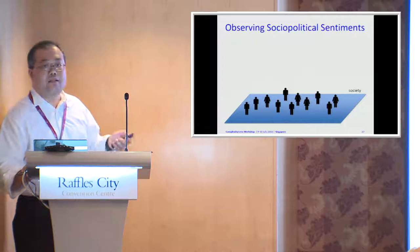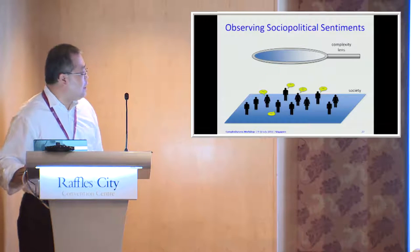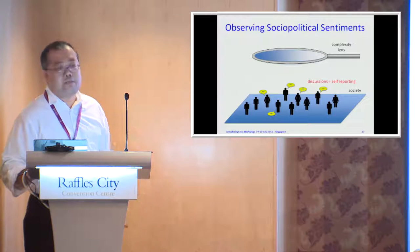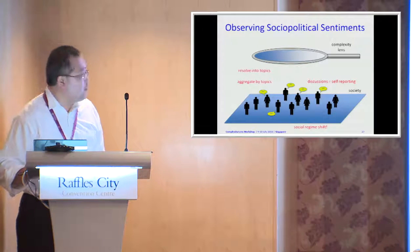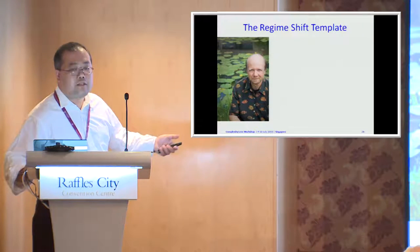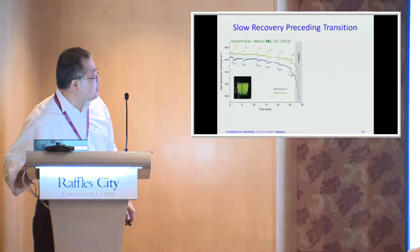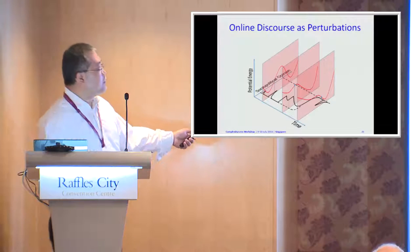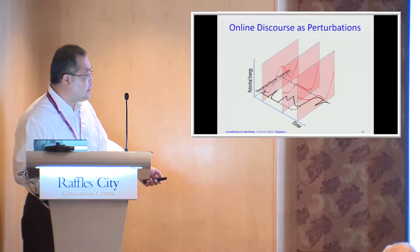We apply this idea to observing social political sentiments. Society is observed through what people say — discussions among people are a form of self-reporting. We can resolve them into topics, aggregate by topics, and test for social regime shift — there is a big theory behind regime shifts, made popular by Martin Schaeffer. The online discussions are actually perturbations to social political opinions: a perturbation appears and relaxes back to the old opinion; a stronger perturbation still relaxes; a series of strong perturbations brings the system close to the critical point, causing a rapid transition to a new opinion set, after which perturbations cannot bring it back.